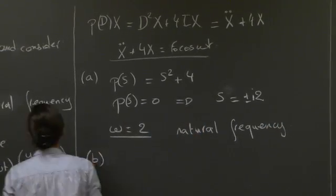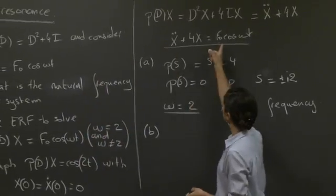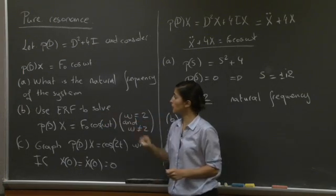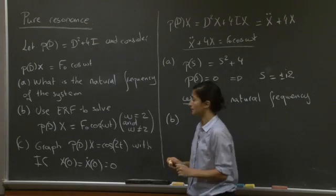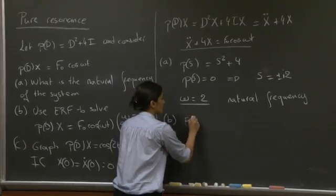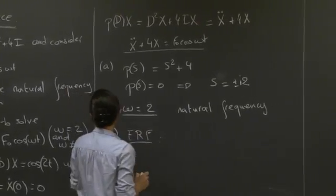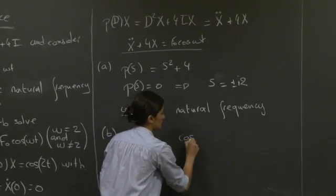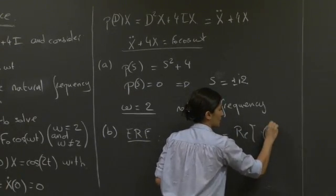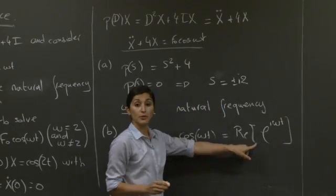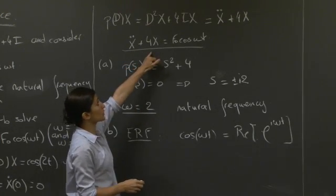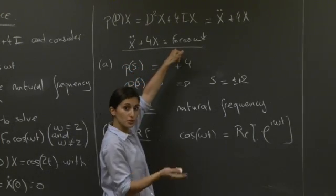Second part, now we're asked to look at the full system with the forcing on the right-hand side and find the exponential response formula, using the exponential response formula, find one solution to this system. So here we're talking about a particular solution with the exponential response formula. So what does the ERF tell us? The ERF, if you recall here, the base of it for this system, for example, is the fact that cosine is the real part of the exponential i omega t.